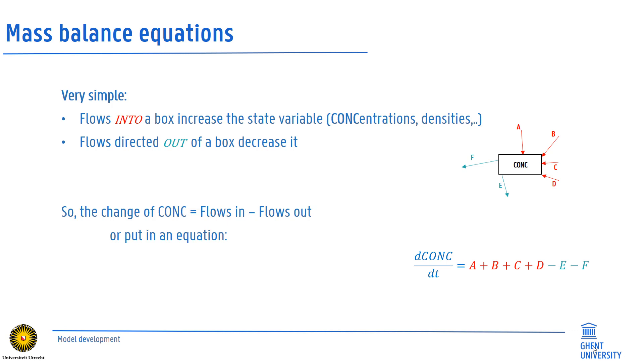If we put this together, any change in concentration within the relevant time frame, so dCON on dt, is simply the sum of all red import flows minus the two green export flows. So dCON on dt equals A plus B plus C plus D minus E minus F. This is a formulation of a differential equation.